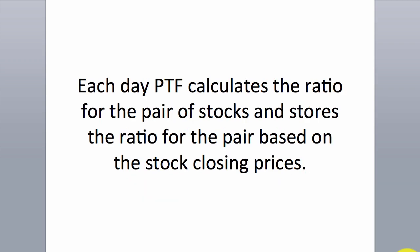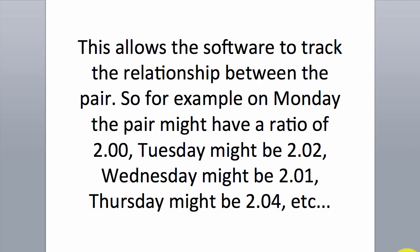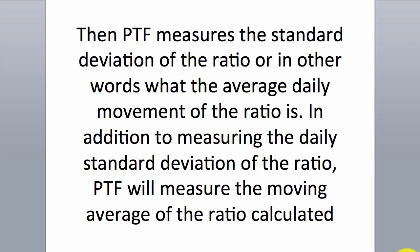Each day, PTF calculates the ratio for the pair of stocks and stores the ratio for the pair based on the stock closing prices. This allows the software to track the relationship between the pair. So for example, on Monday the pair might have a ratio of 2.0, Tuesday might be 2.02, Wednesday might be 2.01, Thursday might be 2.04. Then PTF measures the standard deviation of the ratio, or in other words, what the average daily movement of the ratio is.